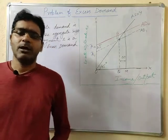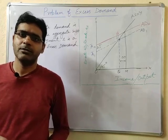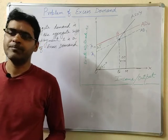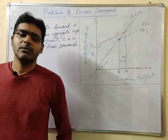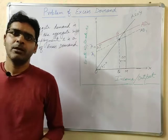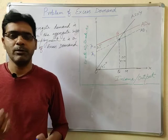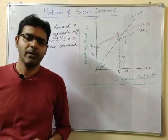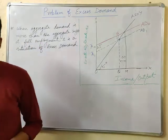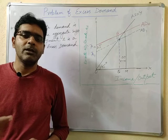Welcome friends. We have arrived at the last section of the third unit, which is called determination of income, output and employment. In our previous class we discussed the problem of deficient demand. Today we are going to discuss the problem of excess demand — just the reverse situation of deficient demand.